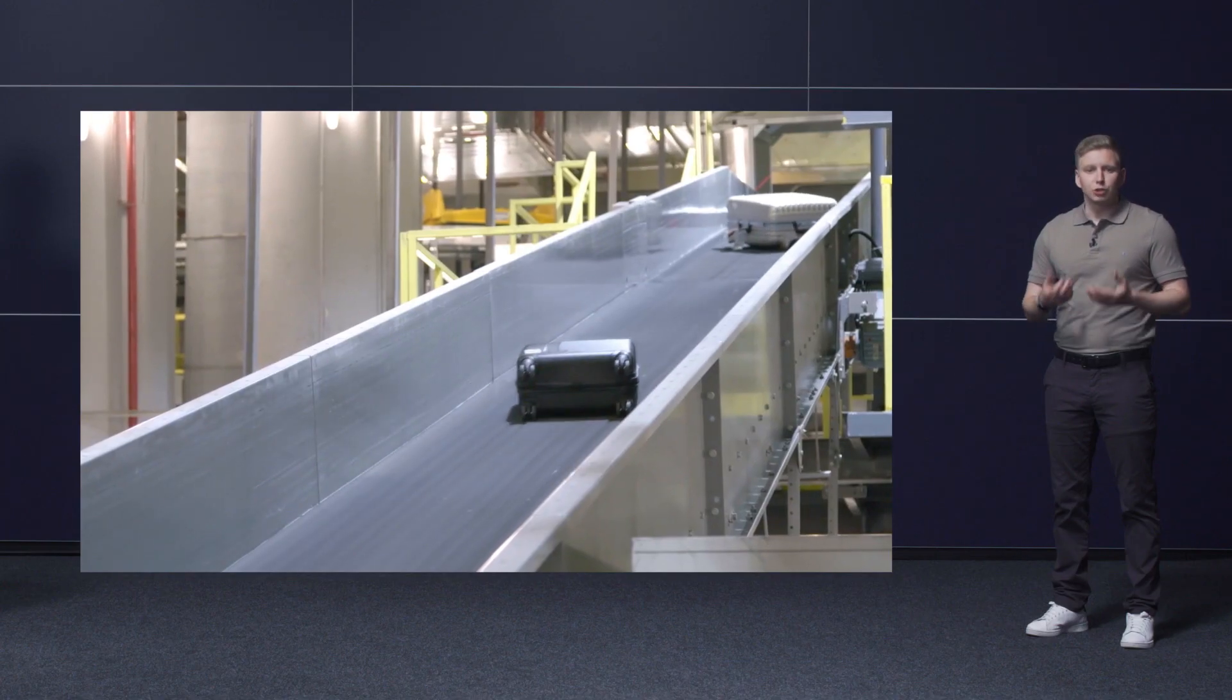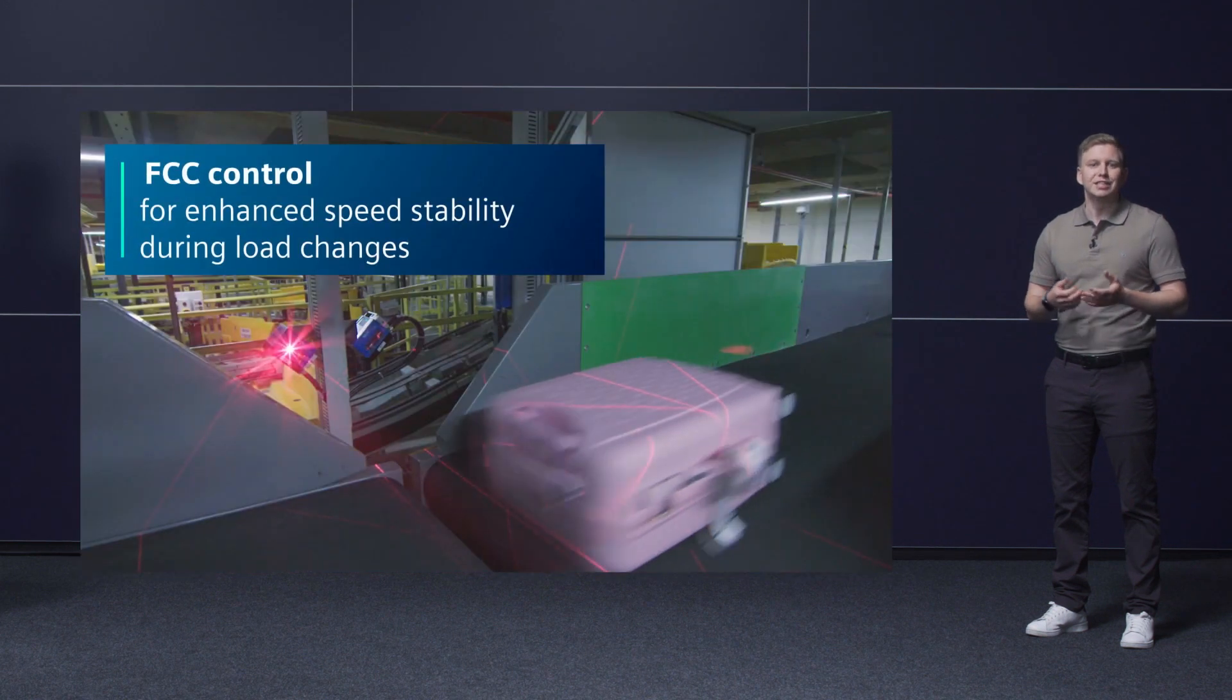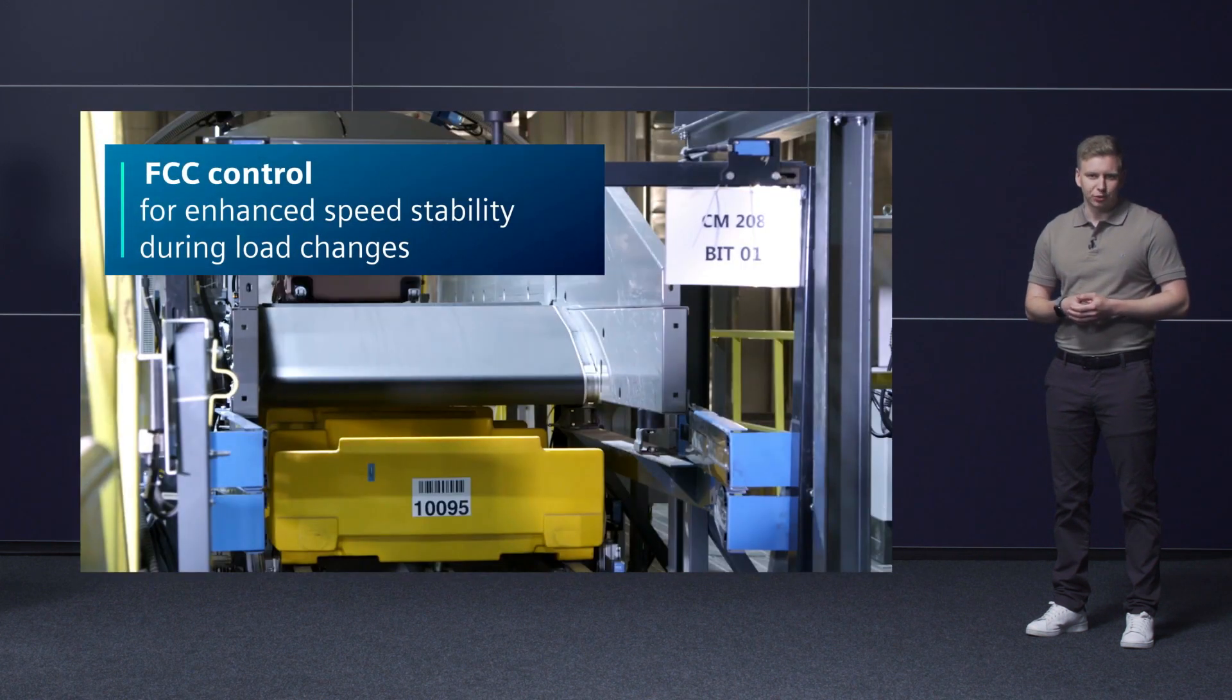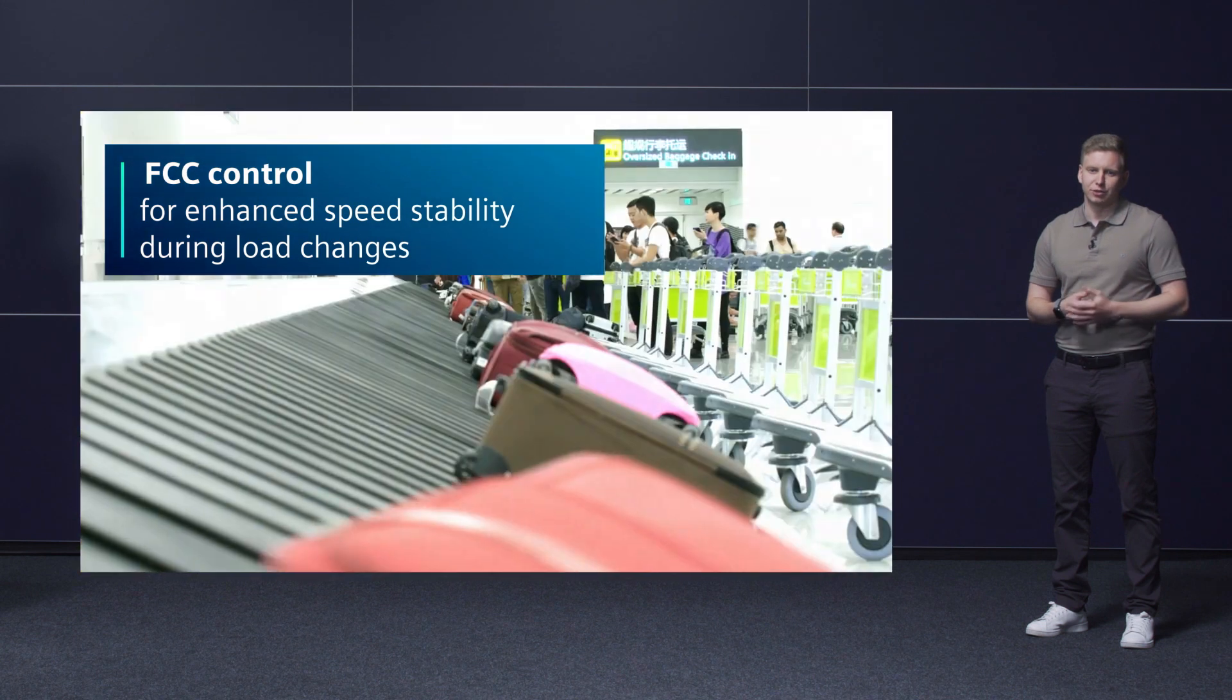Another improvement is the further development of the U/F control to what we call FCC control, flux current control. This is used to compensate for changing loads. Here is a practical example. If bags of different weights are being loaded onto a baggage handling system, FCC helps to keep the conveyor speed constant despite these load changes.